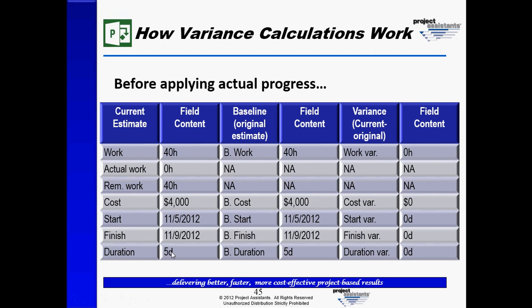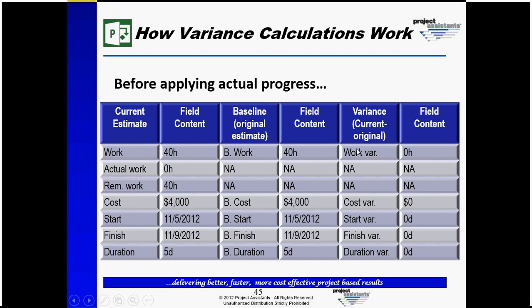Because this plan was just baselined, we also see that the baseline fields have the same contents as the current estimate fields. So the work is 40, baseline work is 40, cost is $4,000, baseline cost is $4,000. The same is true for the start and finish dates and the duration.